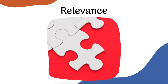Next up is R for relevance. You might find a really cool source about kangaroos, but if you're writing a paper on koalas, even if the source meets all the other items on the checklist, it isn't really relevant to your ideas. Even if it mentions koalas in one sentence, it's not really a relevant source to your purpose. A relevant source is one that deals with information that is directly and meaningfully related to your topic. Don't settle for less.